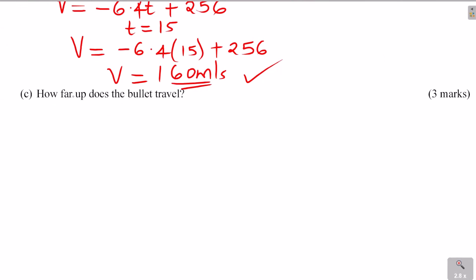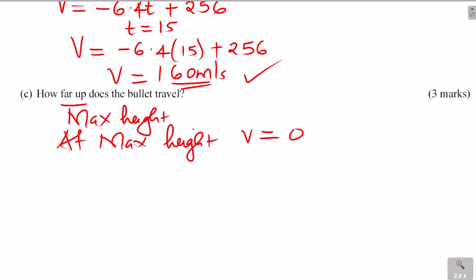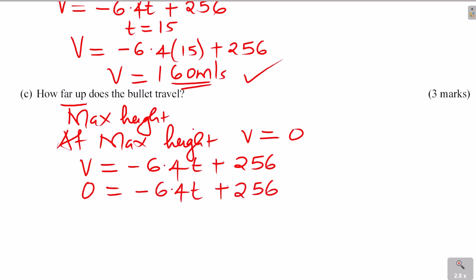Part C: How far up does the bullet travel? 'How far up' means the maximum height. You need to know that at maximum height, velocity will be zero. Taking the velocity expression v equals negative 6.4t plus 256 and substituting v equals 0, we solve for t and get t equals 40 seconds. So the bullet reaches maximum height at t equals 40 seconds.